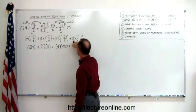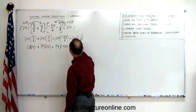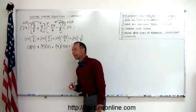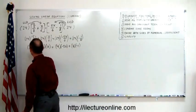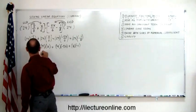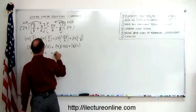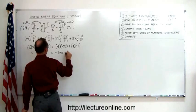And 8 goes into 24 three times, so this becomes 3 times a negative 1. And then if we multiply these out, we get 15 plus 4x equals minus 20x minus 3.